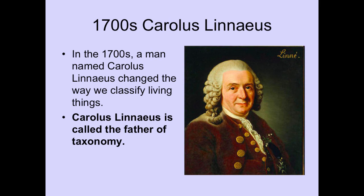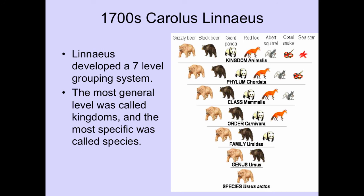Then came Linnaeus. Around the 1700s, Linnaeus started to change the way that we classified living things. He is called the father of taxonomy. Linnaeus developed a seven-layer grouping system. The most general level is called kingdoms, which we're going to be learning about, and the most specific is all the way to a species. You can see in this picture that at the top we have the kingdom Animalia — animals. From a grizzly bear all the way to a starfish are all animals. As you go farther down in the classification, we get more specific: animals with backbones, then mammals that produce milk and have hair, then animals that only eat meat, then animals that are bears, and then all the way to a grizzly bear.